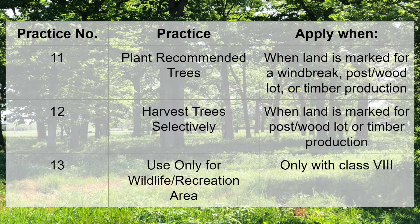Practice number eleven: plant recommended trees — apply when land is marked for a wind break, post or wood lot, or timber production. Practice number twelve: harvest trees selectively — apply when land is marked for post or wood lot or timber production, but not when it is marked for wind break. Practice number thirteen: use only for wildlife or recreation area — this is only applied with class eight, which we are not going to see, so essentially disregard this practice.